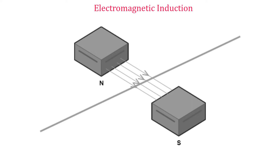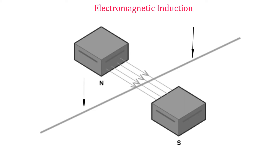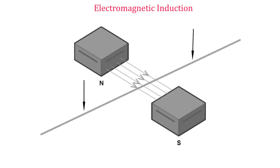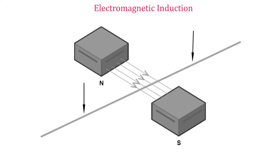Electromagnetic induction. We have considered how a magnetic field is produced when current flows through a conductor. The reverse is also true — a magnetic field can be used to produce current. When a wire or conductor is moved across a magnetic field, a small EMF is generated in the wire. This phenomenon is referred to as electromagnetic induction. If the wire forms part of a complete circuit, the EMF makes current flow.